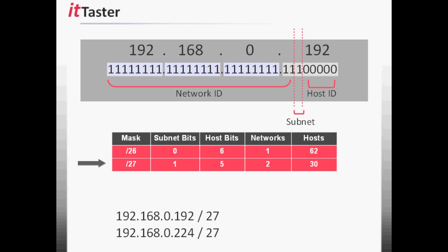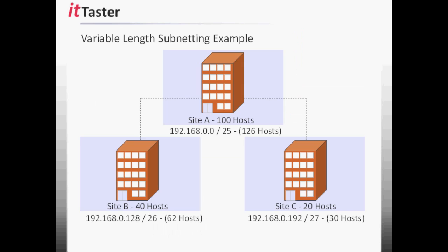This creates two subnets: 192.168.0.192/27 and 192.168.0.224/27, with 30 valid hosts per subnet after allowing for the network address and broadcast address. So we assign 192.168.0.192/27 to Site C. 30 valid hosts will accommodate Site C's requirement of 20 hosts. The second subnet 192.168.0.224/27 is put to one side — it's effectively a spare subnet that we may wish to use in the future.